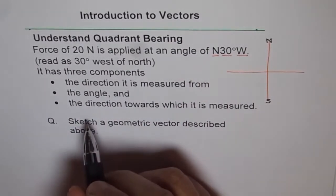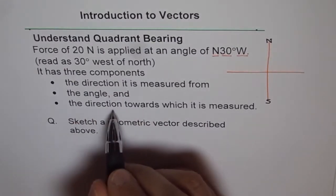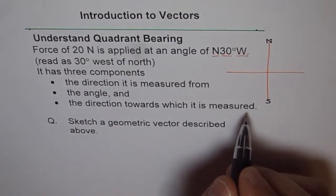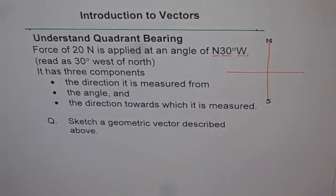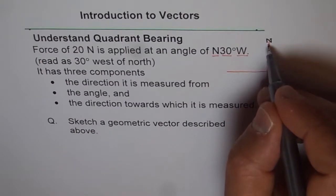And the third is the direction towards which it is measured. West in this case. It means that we are measuring our angle with respect to north.